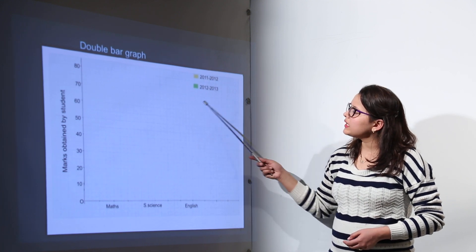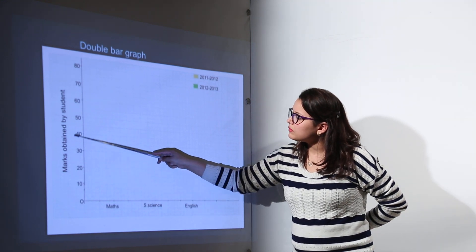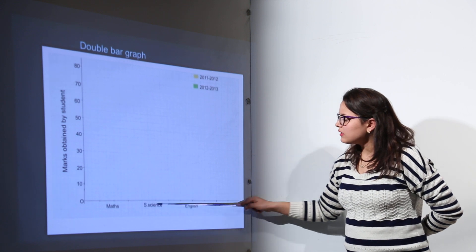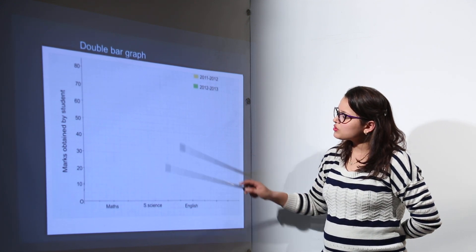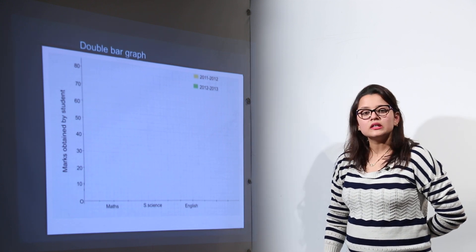Now the next question I have made is a double bar graph. Here we will be dealing with marks obtained by students. Now here the marks and the subjects are written. The subjects are written on the x-axis, the marks obtained are written on the y-axis the same way that we have done earlier.